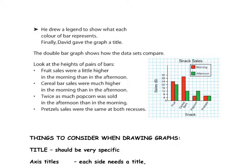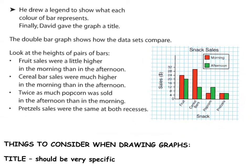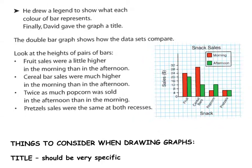Here we go. We see our completed graph. He has drawn a legend. We need to have a legend to show what each color of the bar represents. So he's got morning is red, afternoon is green. And he needs a title, and it's snack sales. I probably would have added the date for the snack sales just to be specific. It's very clearly drawn.